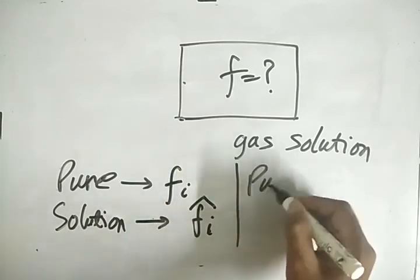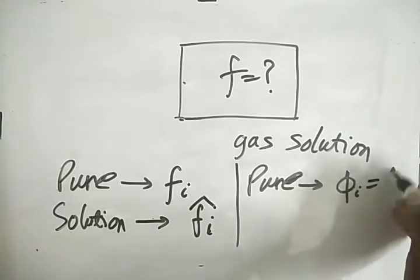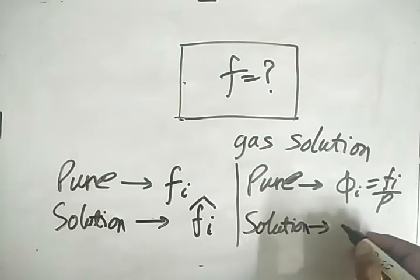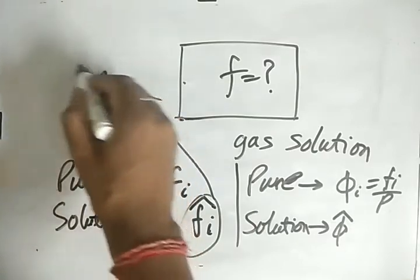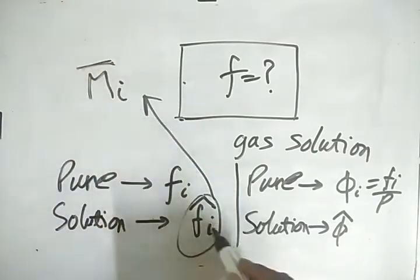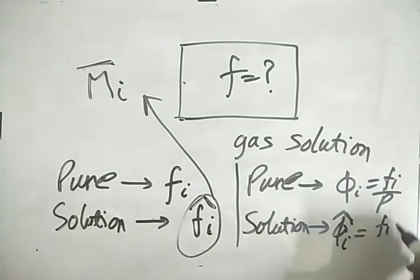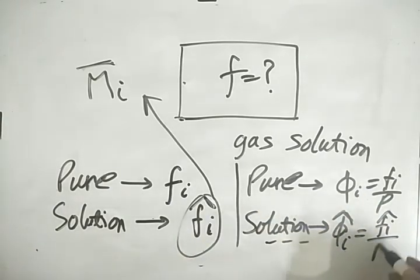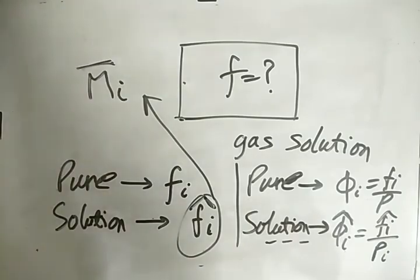Similarly, the fugacity coefficient for a solution is written as phi-i-hat. The cap notation is analogous to the bar notation used for partial molar properties. The fugacity coefficient for the solution is fi-hat divided by the partial pressure. We will look into this further in the next part. Hope you liked this video — please like, share, and subscribe.